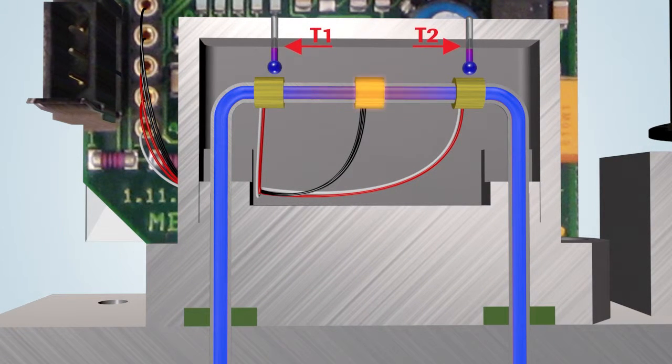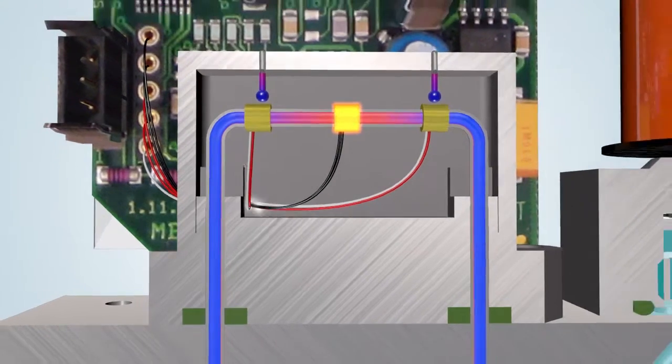As long as there is no flow the two temperature sensors heat up evenly. The measured value is zero. This signal is forwarded to the microprocessor.